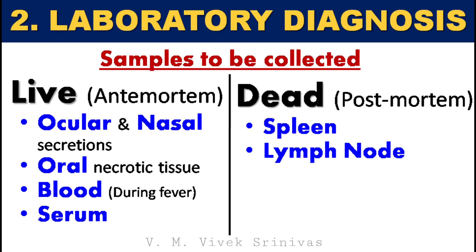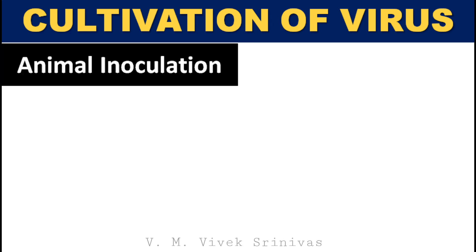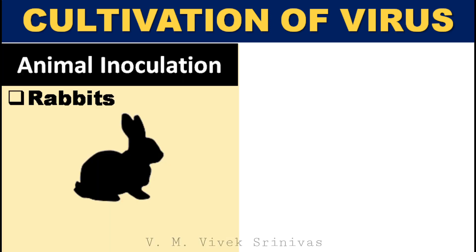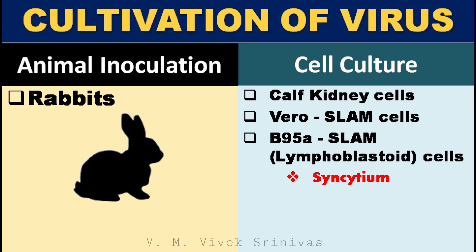In dead animals, spleen and lymph nodes are collected. This virus can be cultivated or isolated in the lab by two ways: animal inoculation using rabbits, or a cell culture system using calf kidney cells, Vero cells, and B95a lymphoblastoid cells.